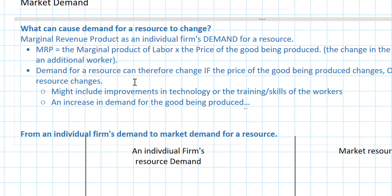If workers are more productive, firms want to hire more workers — replace technology with workers perhaps. On the other hand, if robots or technology becomes more productive, firms want to substitute robots for labor. This very same concept applies not only to the productivity of labor but the productivity of capital and technology as well.